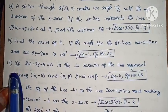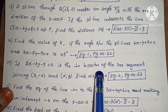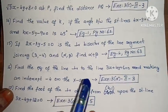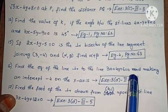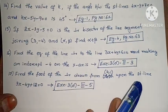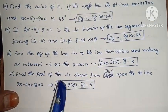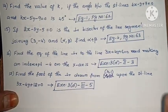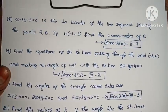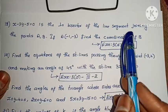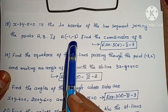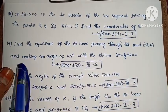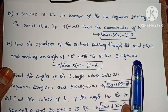Example 1, page number 62. If 2x minus 3y minus 5 equals to 0 is the perpendicular bisector of the line segment joining (3, -4) and (alpha, beta), find alpha plus beta. Example 4, page number 63. Next, find the equation of the line perpendicular to 3x plus 4y plus 6 equals to 0 and making an intercept of -4 on the x-axis. Next, find the foot of the perpendicular drawn from (4, 1) upon the straight line 3x minus 4y plus 12 equals to 0. Next, x minus 3y minus 5 equals to 0 is the perpendicular bisector of the line segment joining points (a, b); if A equals to (-1, -3), find the coordinates of B. Next, find the equations of the straight lines passing through (-3, 2) and making an angle of 45 degrees with the straight line 3x minus y plus 4 equals to 0.